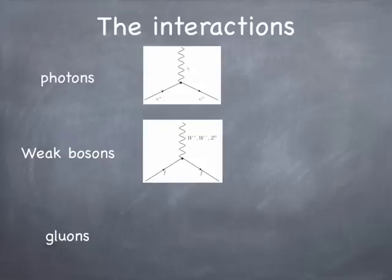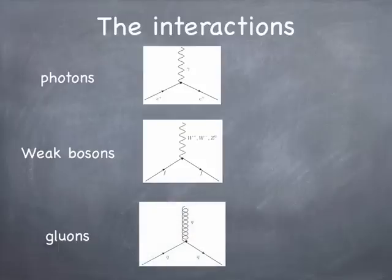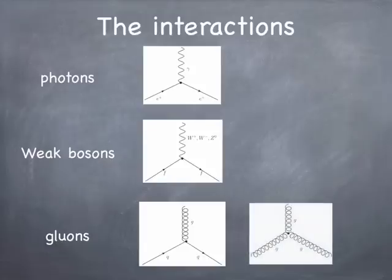Then there are the gluons, which interact with quarks. Quarks carry color, and in the same way that the photon interacts with electric charge, the gluons interact with color charge. The other thing is that gluons actually carry color with them, so unlike photons, gluons can interact with one another. That's one of the things that makes dealing with quarks, gluons, and the color force so complicated.